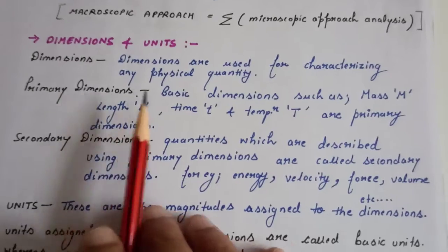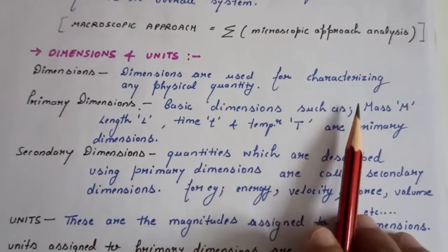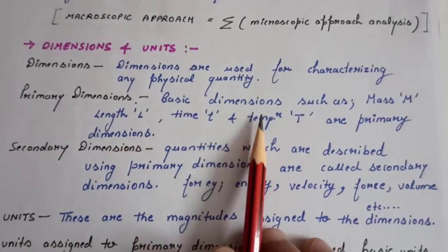Primary dimensions are basic dimensions such as mass, length, time, and temperature.